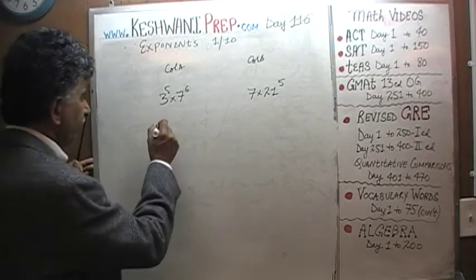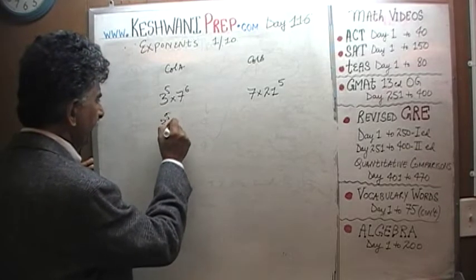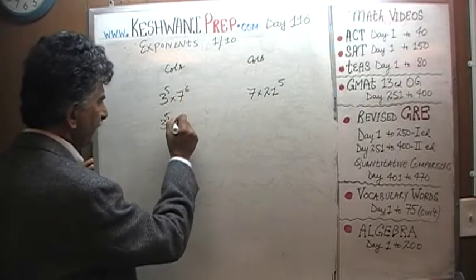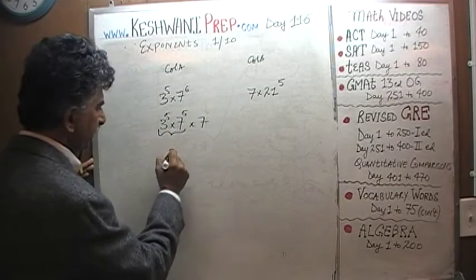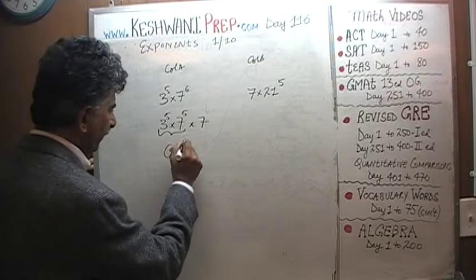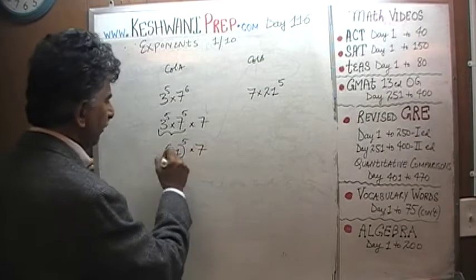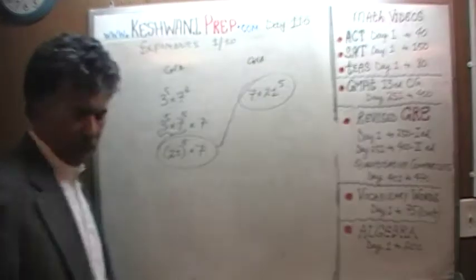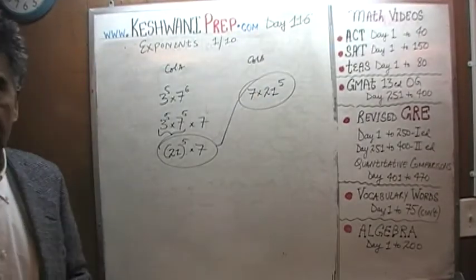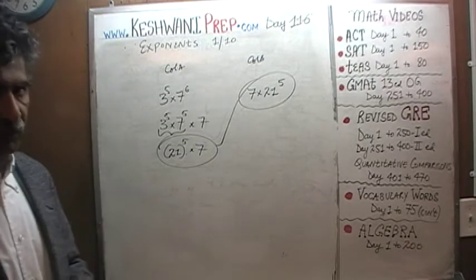3 raised to 5 is simply 3 raised to 5 and 7 raised to 6. 7 raised to 6 can be written as 7 raised to 5 times 7. Now we have 3 times 7 which is 21 raised to 5 times 7, 21 raised to 5 times 7 is exactly what we have here. These two are equal. Again, this is a very easy question.